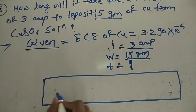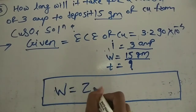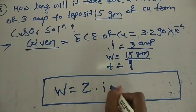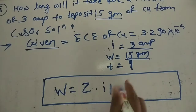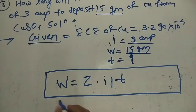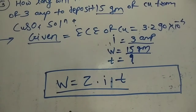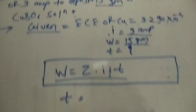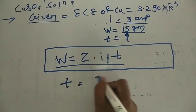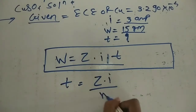Again we use Faraday's law: W = Z × I × T. We need to find time T. Rearranging the formula: T = W / (Z × I).